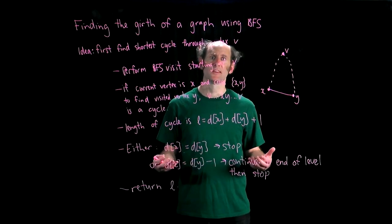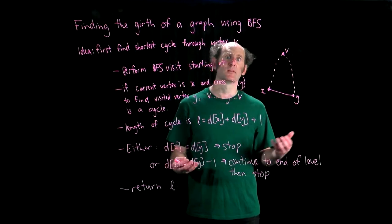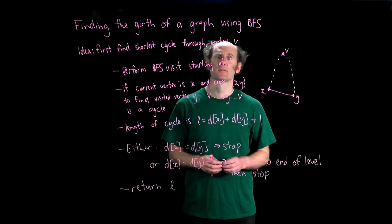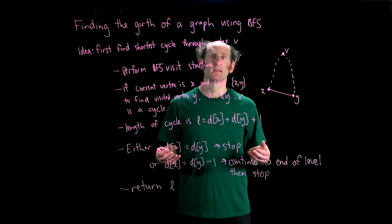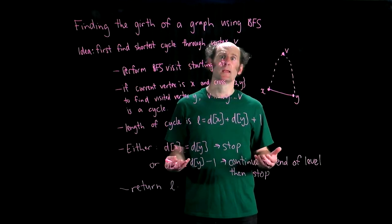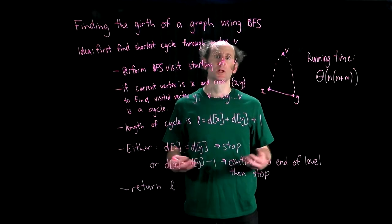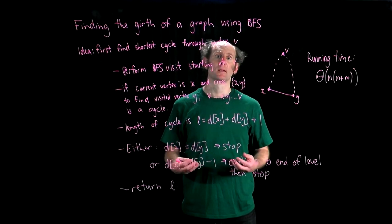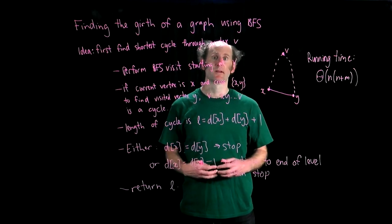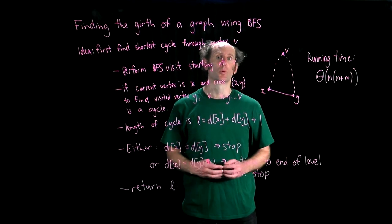How long does this procedure take? Well, since BFS is linear in the size plus order of the graph, and we need to run it n times, once for each vertex, the running time for finding the girth using this algorithm is order n times n plus m. And so that running time, like a lot of these problems we've looked at, will depend on the density of the graph. In the worst case when the graph is dense, it is at worst cubic in the order of the graph.